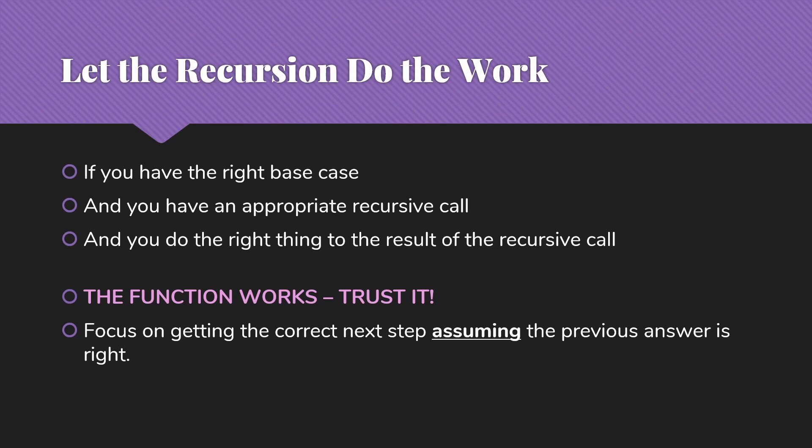Because if your base case is right, you're moving toward it, and you did the right thing to the result, assuming it was right, then it is right. This is one of the really challenging things about writing more complex recursive functions, is that we don't want to trust that, but it's one of the keys to being successful.